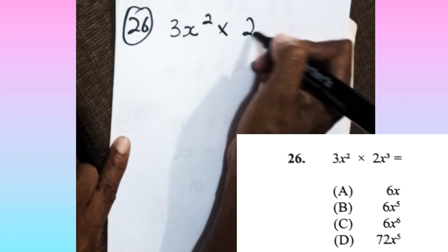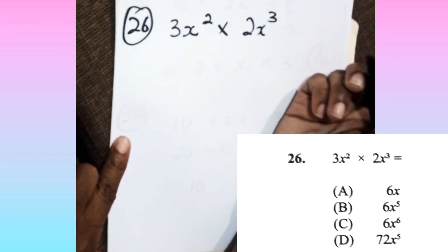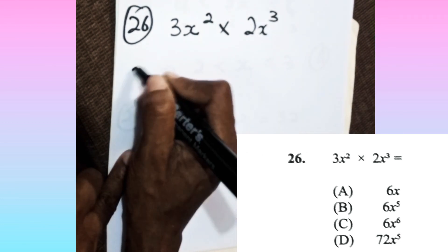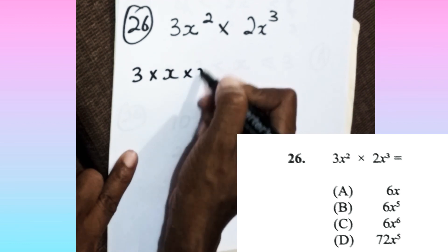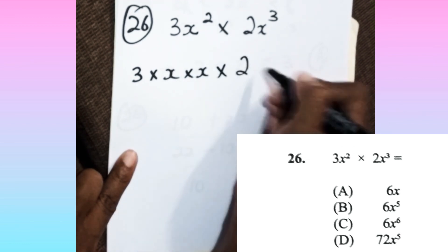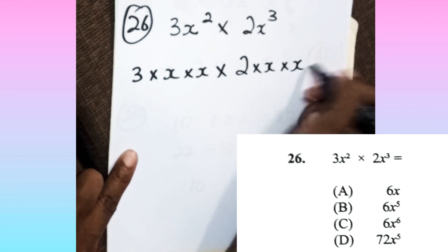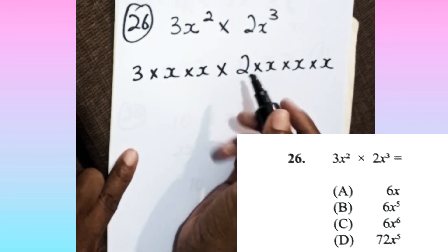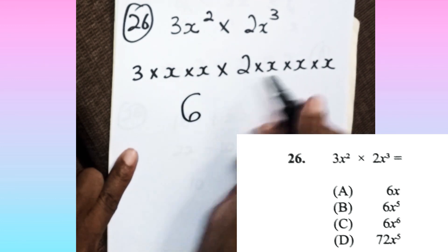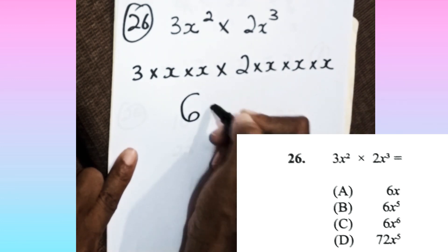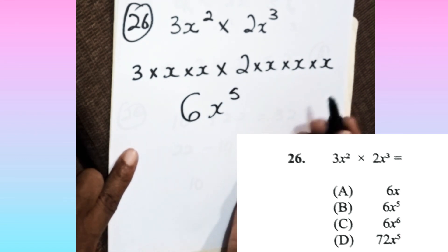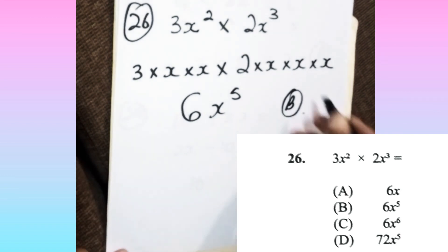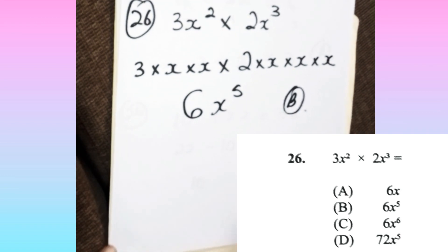The variables are the same, so you multiply the coefficients, which is 3 times 2, and then x squared times x cubed. If you want, you can write out your entire expressions and expand it. 3 times 2 is 6, and there are five x's there, so it's x to the fifth. The answer is B, 6x to the fifth.